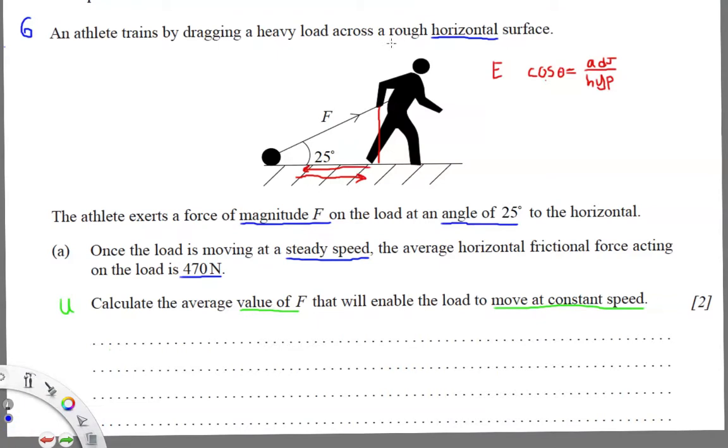Okay, there is some friction involved, so it's important that we know that it's rough. The athlete exerts a force of magnitude F on the load at an angle of 25 degrees to the horizontal. So the guy isn't pulling straight across, he's lifting on it a little bit. Once the load is moving at a steady speed, the average horizontal force acting on the load is 470 newtons.